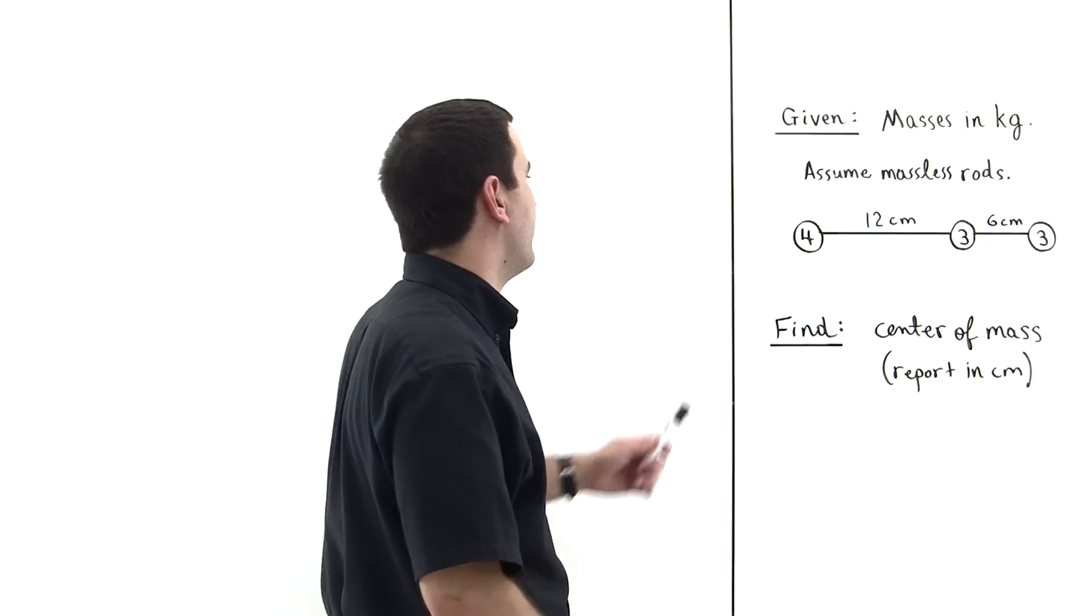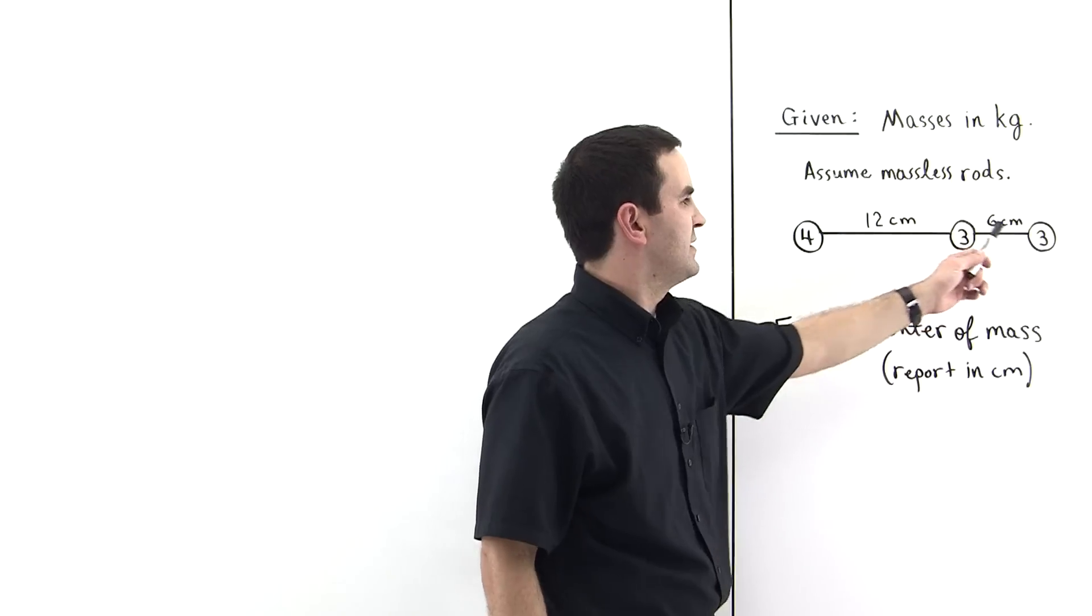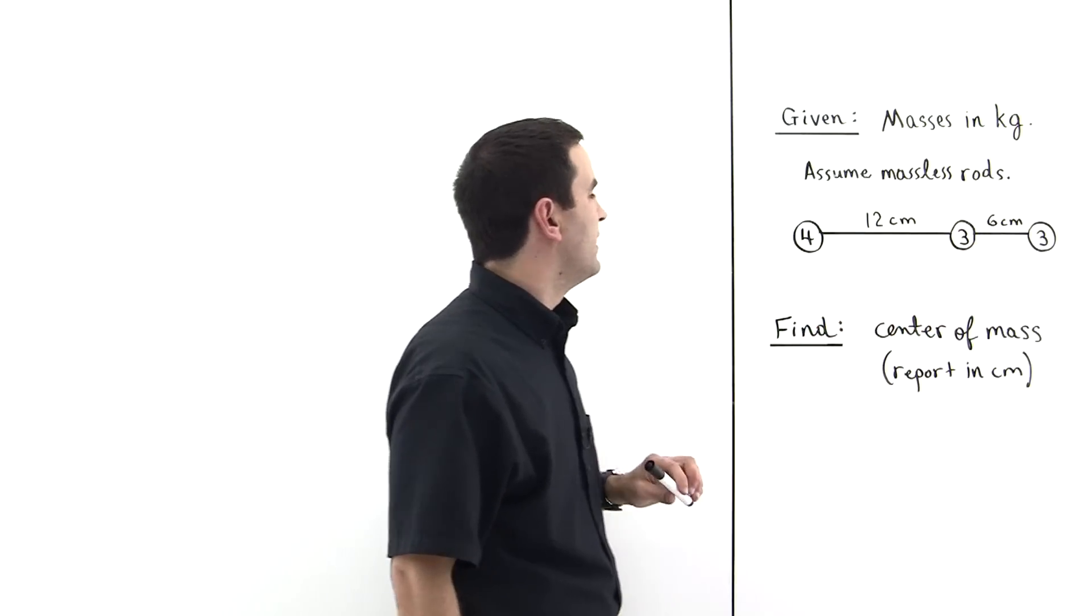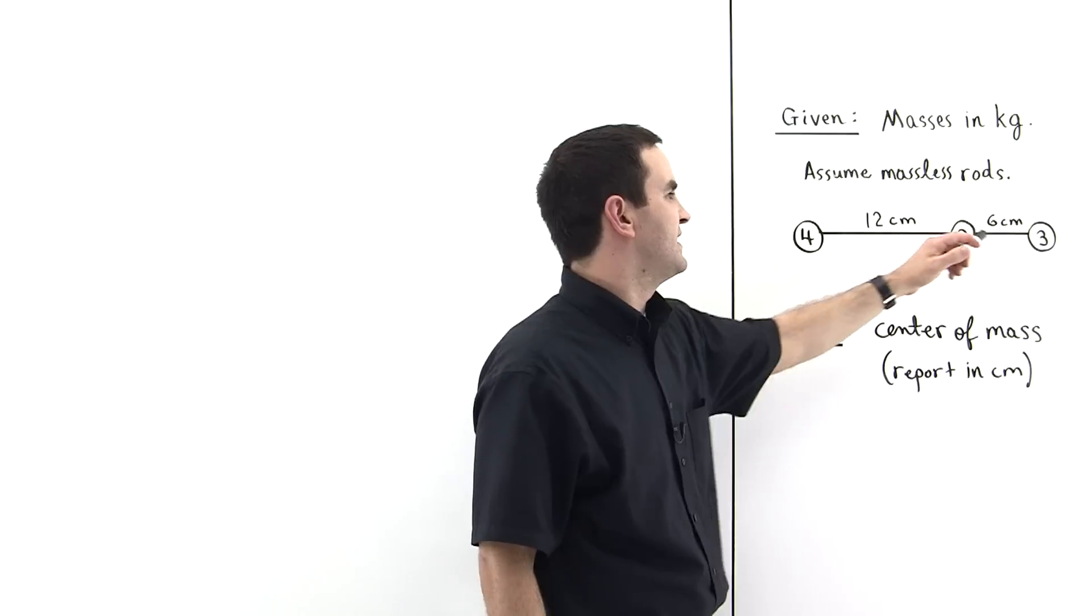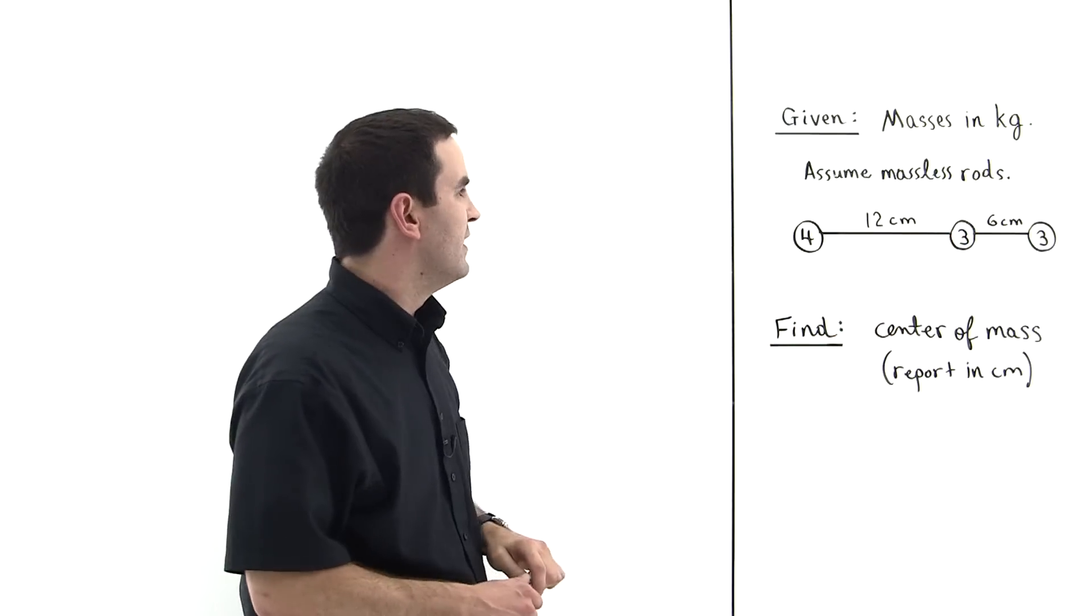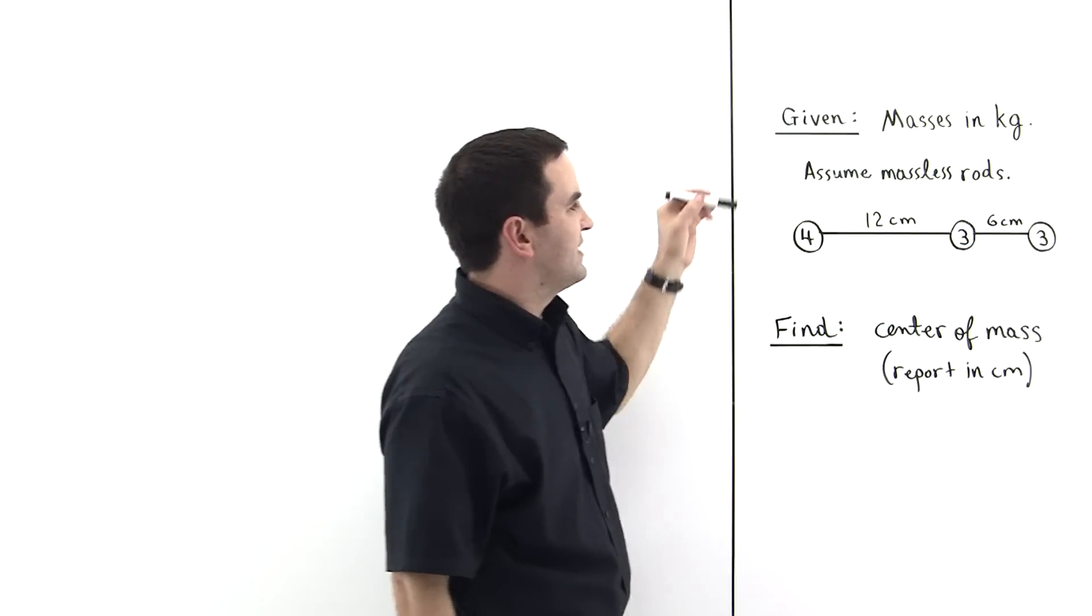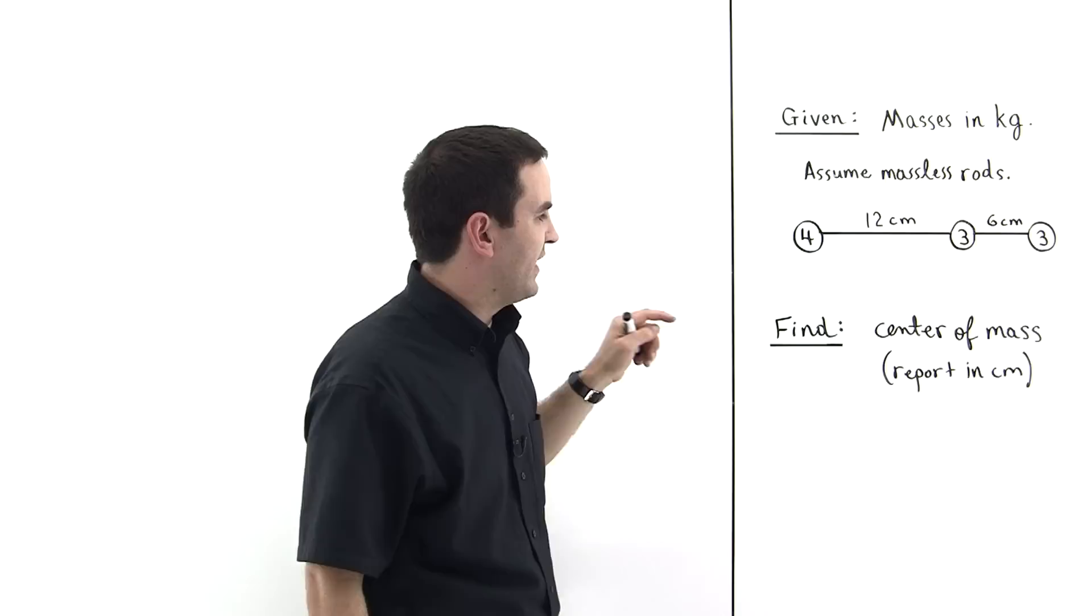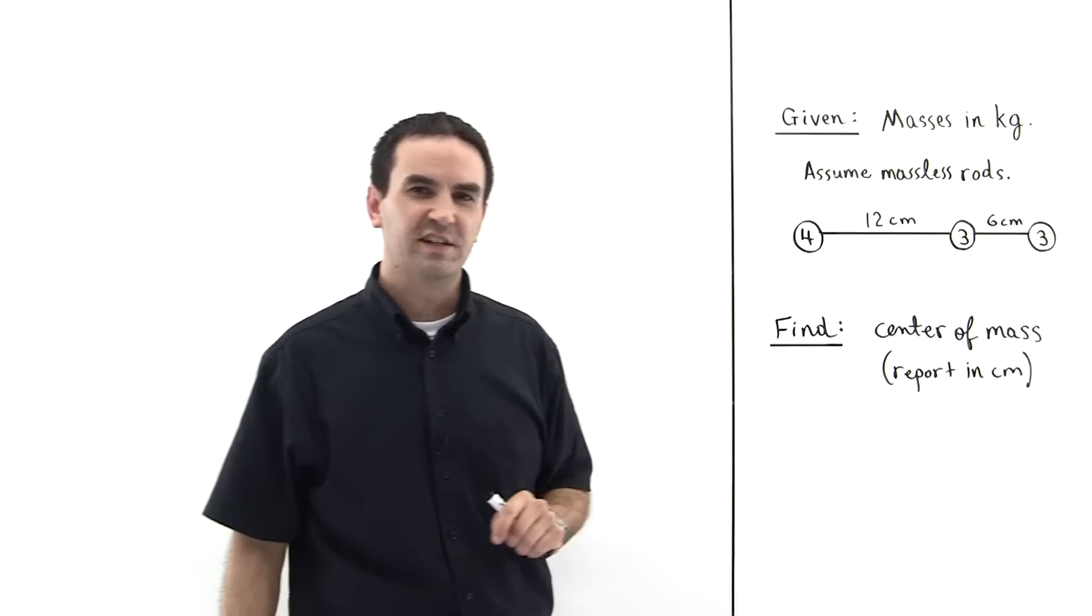We're given three masses: four kilograms, three kilograms, and then again three kilograms. They're separated by 12 centimeters and six centimeters, respectively. We're to assume massless rods, and we're asked to find the center of mass and report it in centimeters.